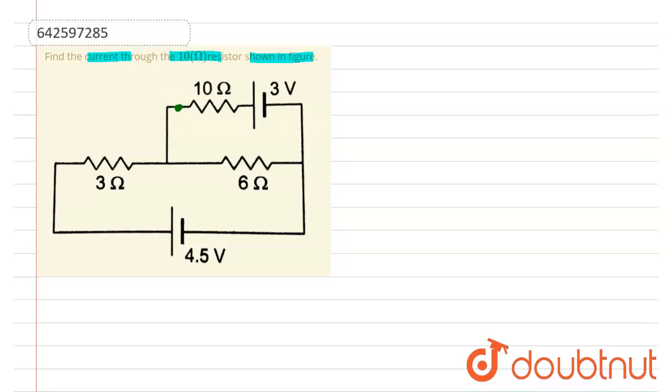To find the current, consider first of all the potential over here is 0 volt. So this potential over here will also be 0 and here potential over here will also be 0. Now the potential over here will be 3 volt.